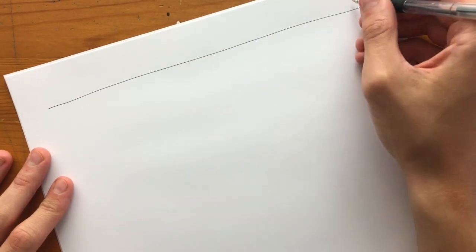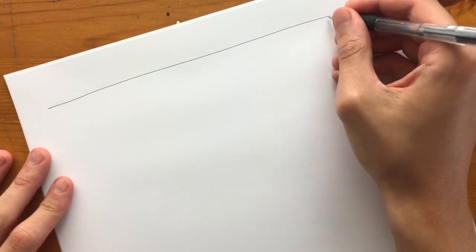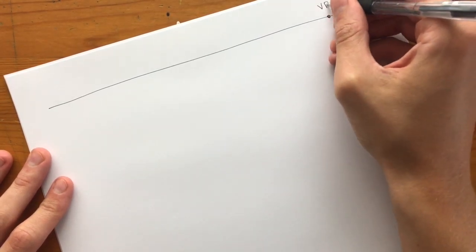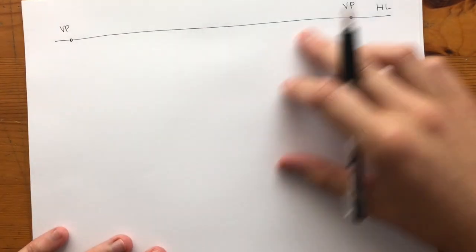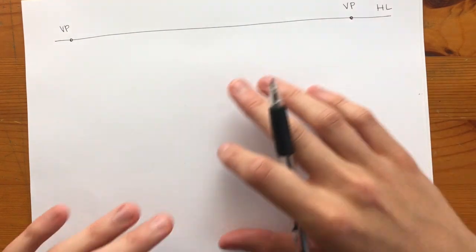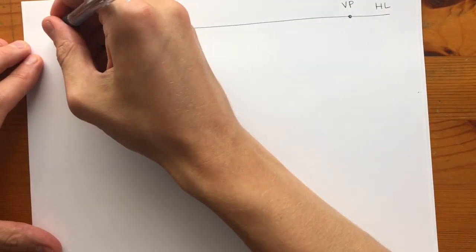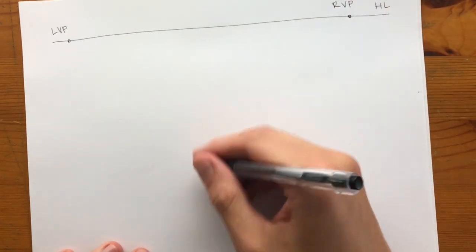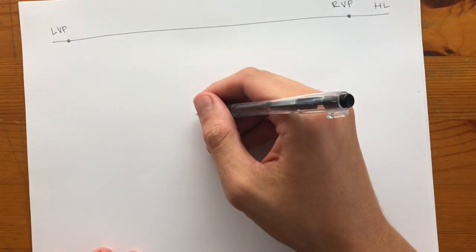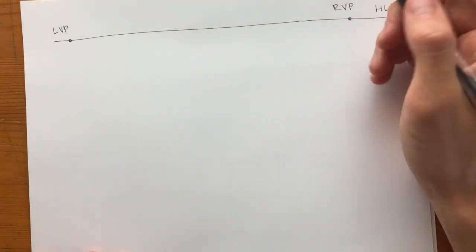Let's start with two-point perspective. So again, start by drawing your horizon line. And now add two vanishing points, a left and a right one. What's different about two-point perspective is that everything you draw will be going towards either the left vanishing point or the right vanishing point. And any lines that are vertical are going to stay parallel, so they don't have any convergence yet.